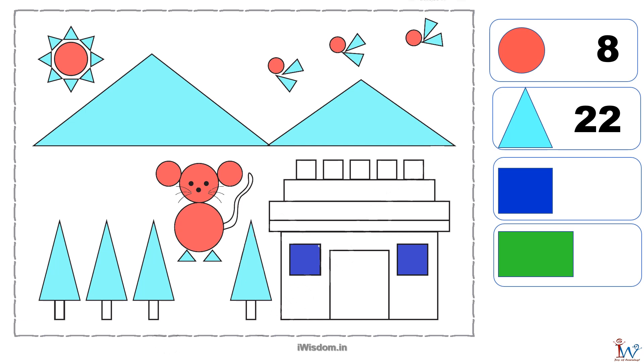Now let me count the squares. There are only two, forming the window of the house. What about the rooftop? I think they are also squares.